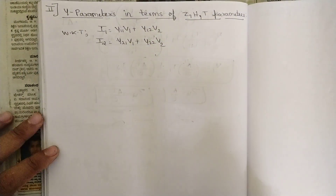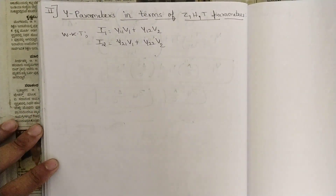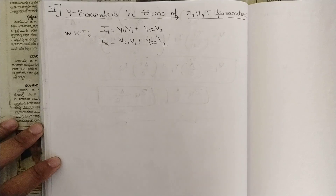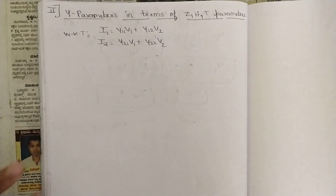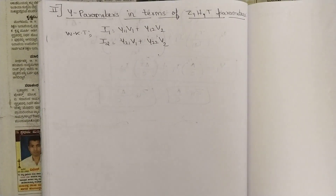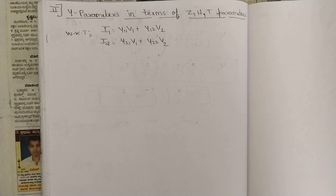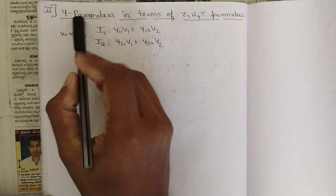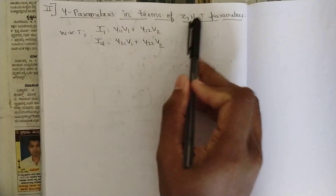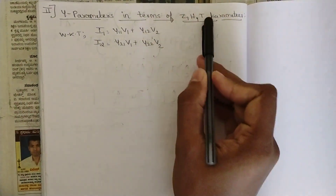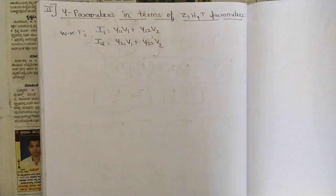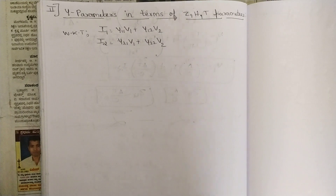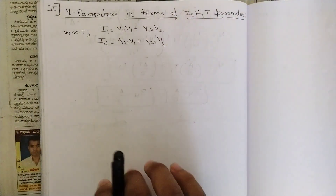Hello everyone, welcome back to this new video. In the previous videos we left off with one interrelationship concept. We represented Z parameters in terms of all other three parameters — Y, H, and T parameters. The Z parameter part is done. Now we are going to represent Y parameters in terms of all other three. In the first video we covered Z parameters in terms of all other three, which gives three questions.